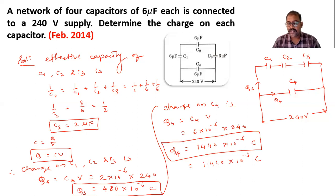millicoulombs. 10^-3 means milli, and coulomb as it is. So the previous value also you can write in terms of millicoulombs: 0.480 millicoulombs.